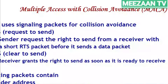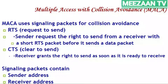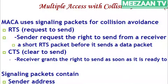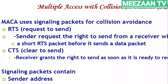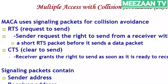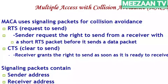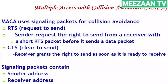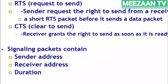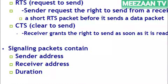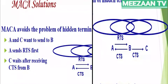The MACA protocol uses signaling packets for collision avoidance, introducing the concept of RTS (Request to Send) and CTS (Clear to Send). The sender requests the right to send from a receiver with a short RTS packet before sending a data packet; the receiver grants the right by sending a CTS when ready to receive. The RTS and CTS packets contain the sender address, receiver address, and the duration of communication.